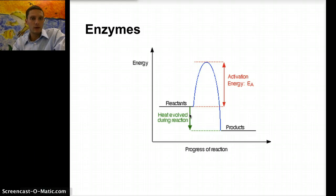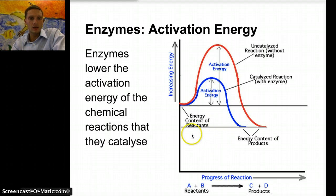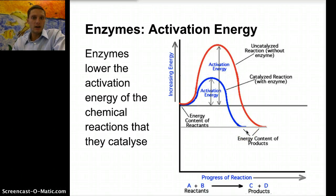We lose some heat during that reaction. Enzymes basically provide a means to lower that activation energy of the chemical reaction, and they help to catalyze or speed up that reaction. Here's a nice graph that shows how this is working. Moving up the y-axis we've got more energy. Our activation energy normally is this red line here — this is without an enzyme. With an enzyme being present, our activation energy is much lower.